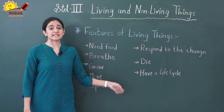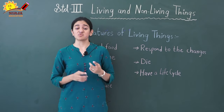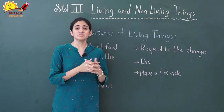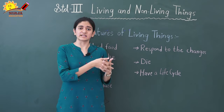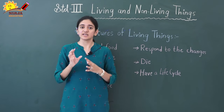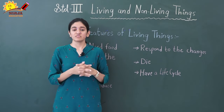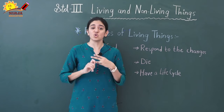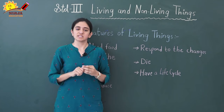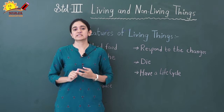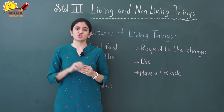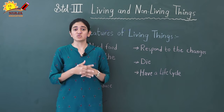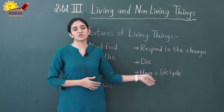Living things can reproduce. Animals, birds, plants, insects, and humans all reproduce. Animals reproduce by laying eggs or by directly giving birth to their young ones. Birds, frogs, and fish reproduce by laying eggs. Plants reproduce through seeds or through other parts of the plant. Humans give birth to their young ones.